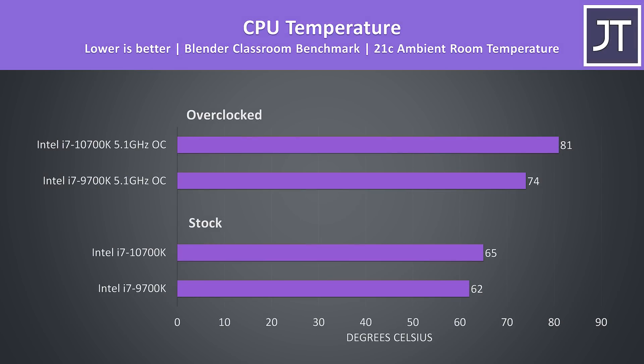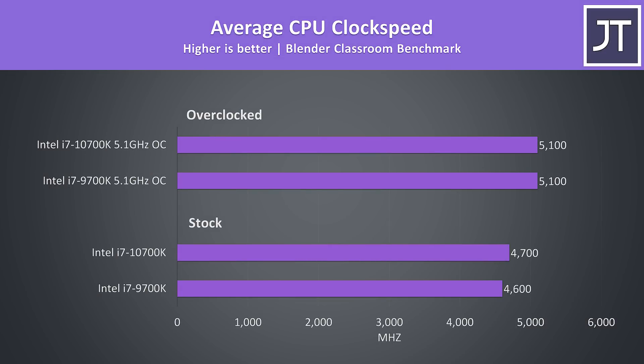Higher power draw typically results in more heat, and even with my 360mm AIO we're getting up to 81 degrees Celsius with the overclock in place on the 10700K, though to be fair this is by no means a finely tuned overclock. The 10700K has a 100MHz higher all-core turbo boost, but I could run both at 5.1GHz with no issues, though this will of course depend on silicon lottery.